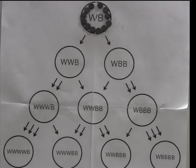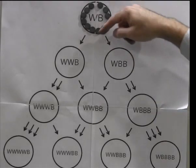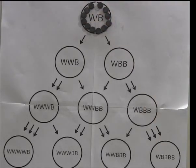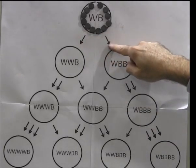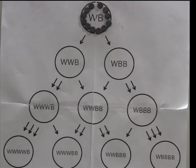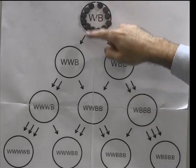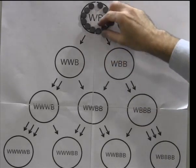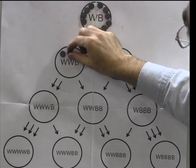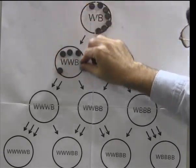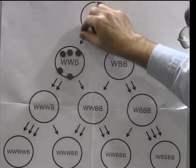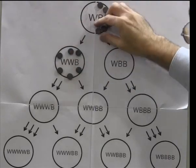We're going to play the chip firing game on this diagram. We're starting with 12 chips on the node marked WB, and we have two outgoing arrows. 12 divided by 2 equals 6, so we're going to send six chips along each one of these two arrows — 6 to the left and 6 to the right.